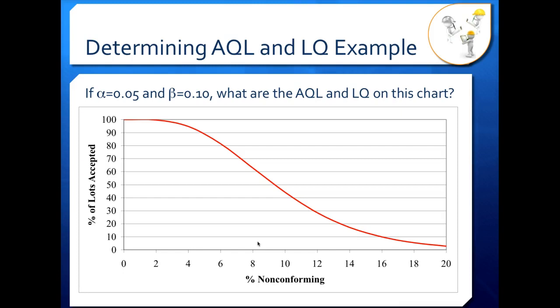Let's take a look at an example problem. Here we have a sample OC curve for a single acceptance plan. We know that our producer's risk alpha is 0.05 and our consumer's risk beta is 0.1. We want to figure out what the AQL and the LQ are on this chart.